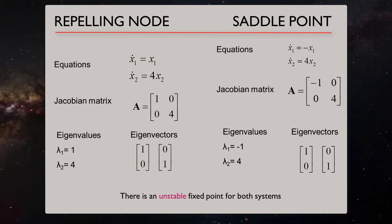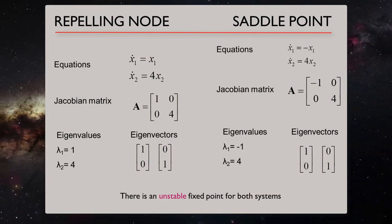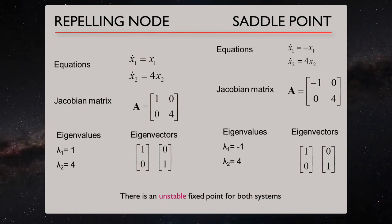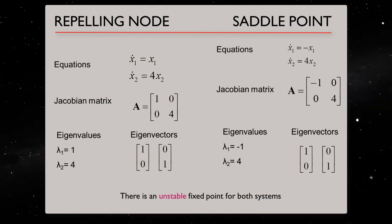Now if we keep only one of the negative signs, we have a third system, which has another type of unstable fixed points, called saddle points. All of these three systems are linear systems.